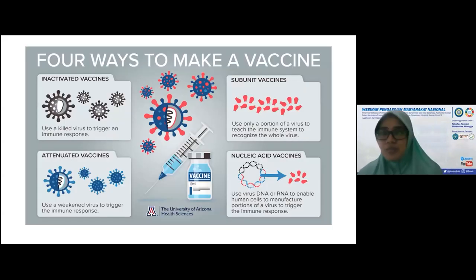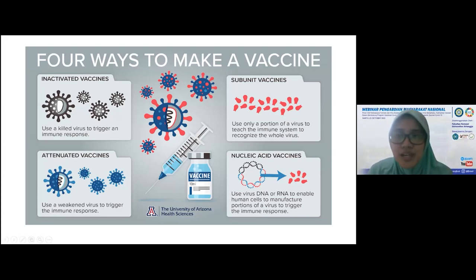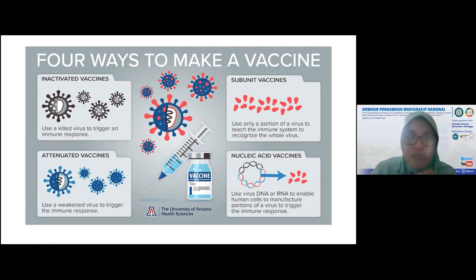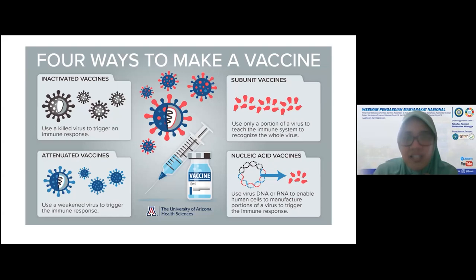Ada empat cara yang sudah umum digunakan untuk pembuatan vaksin. Yang paling mudah adalah inactivated vaksin. Beberapa vaksin COVID yang beredar di Indonesia ada beberapa macam tipenya. Tipe yang paling banyak digunakan saat ini di Indonesia adalah inactivated vaksin. Inactivated vaksin ini adalah virus utuh yang hanya di-inaktivasi dengan bahan-bahan kimia tertentu. Virus ini akan mati tapi masih meninggalkan jejak proteinnya sehingga tubuh mengenali dan akan membentuk respon tubuh terhadap mikroorganisme tersebut.